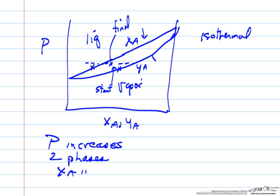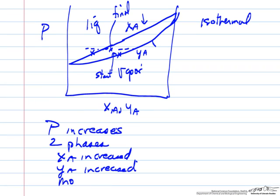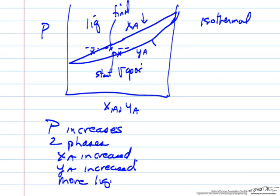This says xA increased and yA increased. And obviously we have more liquid. From the Lever rule, our final point is closer to the liquid side, certainly not drawn very well to scale. More liquid and less vapor.